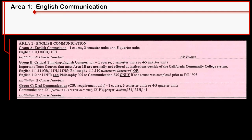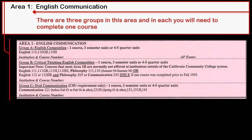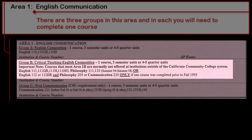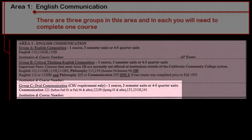Area 1 is the English Communication area. There are three groups in this area, and in each one you will need to complete one course from those listed. Group A lists our required first semester English Composition course. Group B is our second semester English Composition and Critical Thinking course. And Group C is the Oral Communication group, which are primarily courses with topics such as public speaking, interpersonal, and group communication.